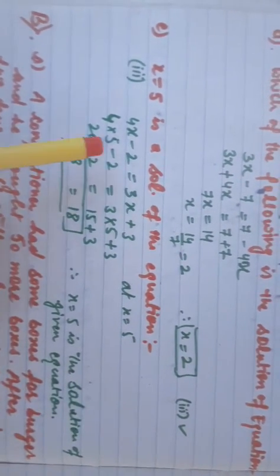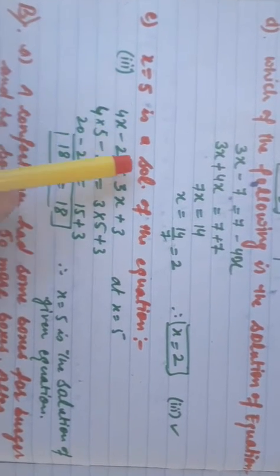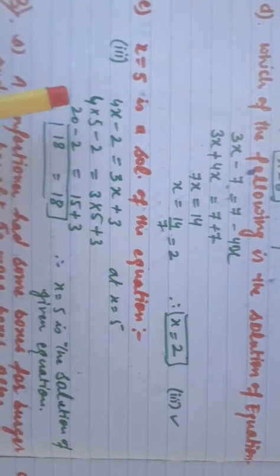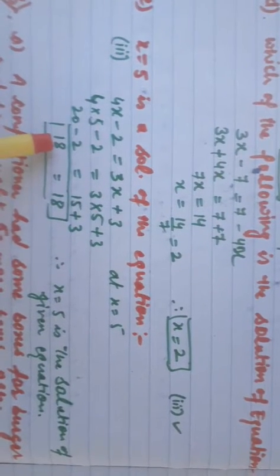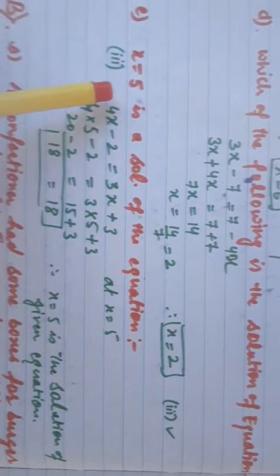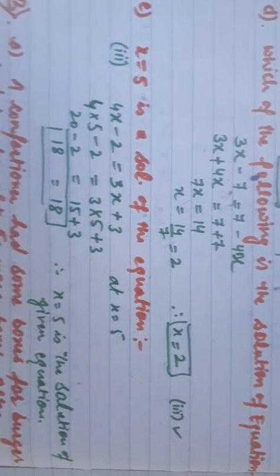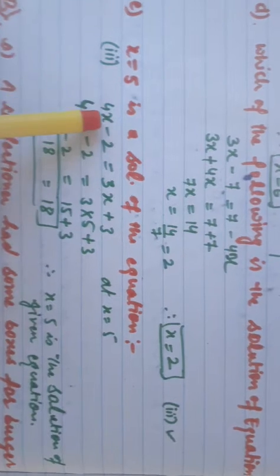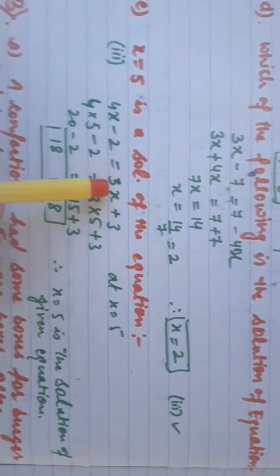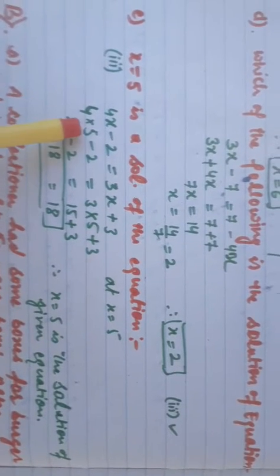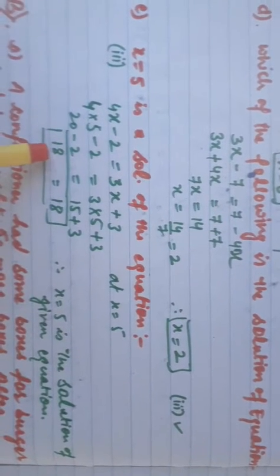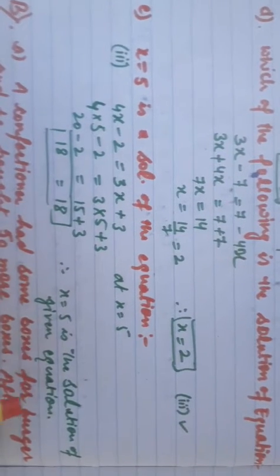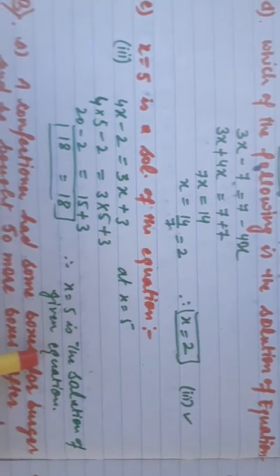Part E: x equals 5 is the solution of a given equation. We need to check which equation has left-hand side equal to right-hand side when x equals 5. The third option, 4x minus 2 equals 3x plus 3, is the right answer. Checking: 4 times 5 is 20 minus 2 equals 18, and 3 times 5 is 15 plus 3 equals 18. Therefore left-hand side equals right-hand side, confirming x equals 5 is the solution.